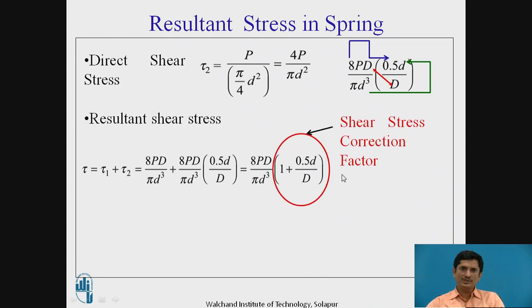I am going to mention it as shear stress concentration factor. Do you know this d by D? Yes, we have used it as 1 by c. Hence I have replaced this term and rewritten it as ks, a factor. What is that factor? Shear stress concentration factor 1 plus 0.5 divided by c. Hence the equation changes to tau equals ks into bracket 8PD upon pi d cubed.